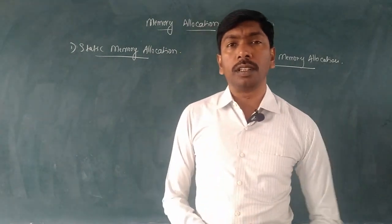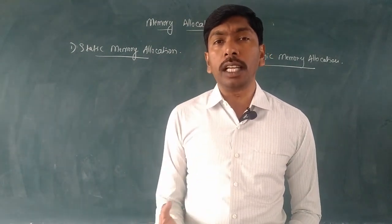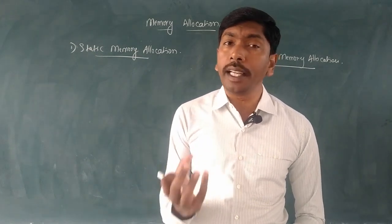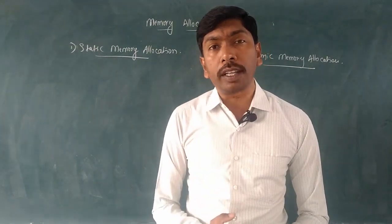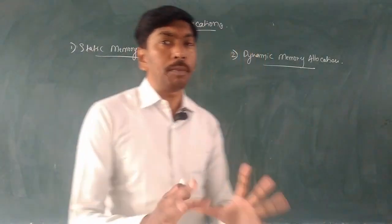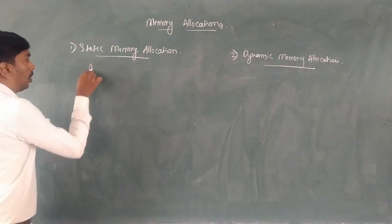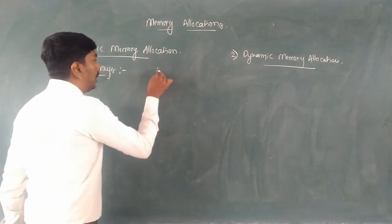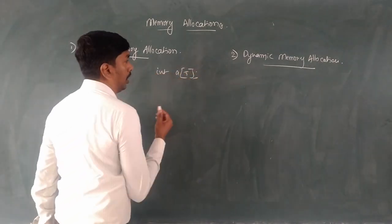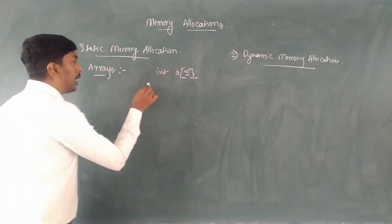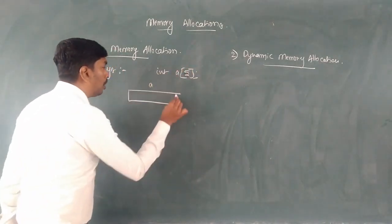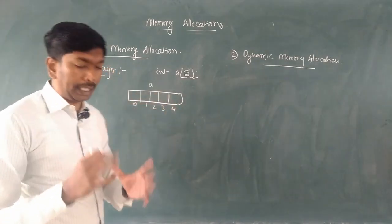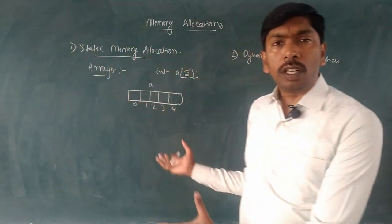In static memory allocation, the memory is allocated at the time of compilation itself. For example, the arrays concept: if we declare integer array 'a' of size 5, it creates 5 memory blocks at compile time. That is static memory allocation.